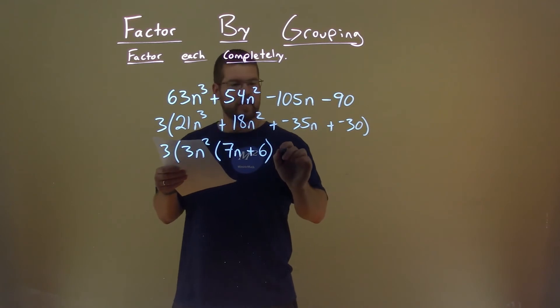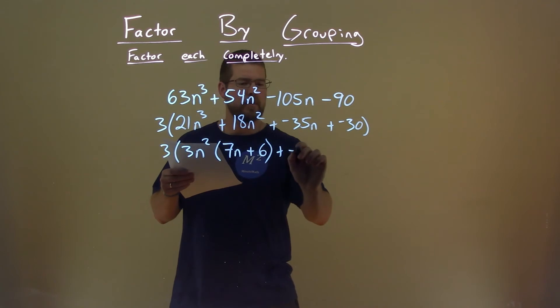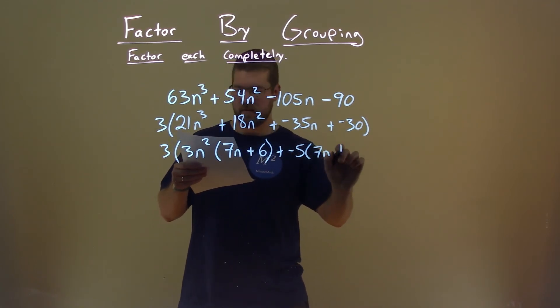Alright, so now we've got to do this again with the second two numbers. Well, negative 5 goes into both of these, so we pull out a negative 5, and what are we left with? Well, a 7n plus 6.